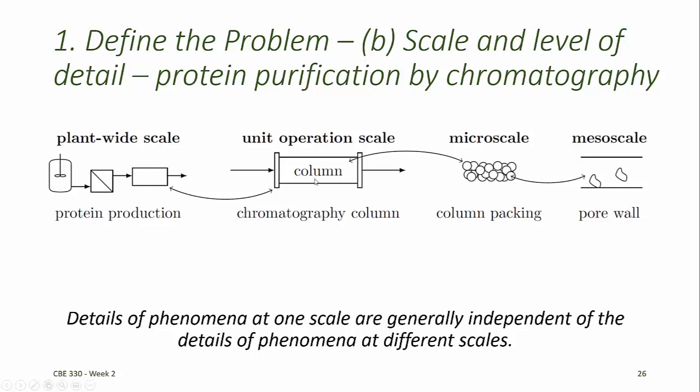At the unit operation scale, we might decide things like the diameter of the column. At the plant-wide scale, we may obtain parameters like the total flow rate and the composition of the feed and effluent streams, and those key parameters might inform our model of the unit operation scale.